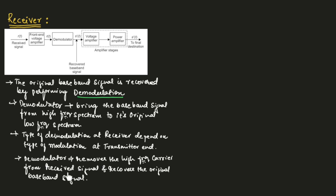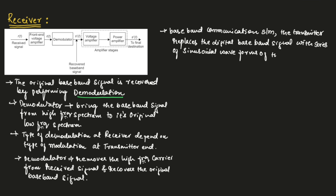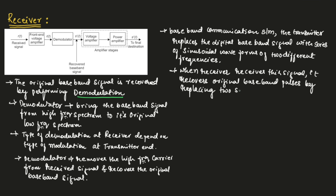In a baseband communication system, the transmitter replaces the digital baseband signal with a series of sinusoidal waveforms of two different frequencies. When the receiver receives this signal, it recovers the original baseband pulses by replacing the two sinusoidal waveforms with the corresponding original signal levels.